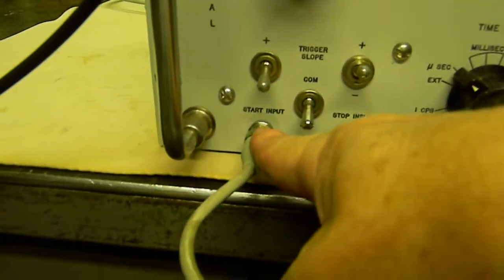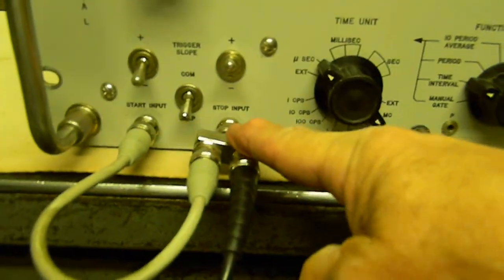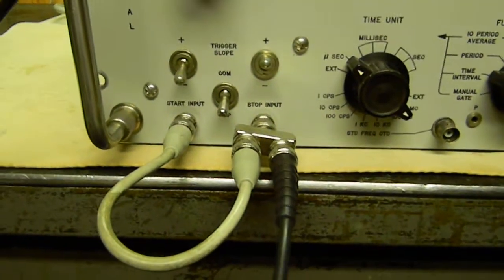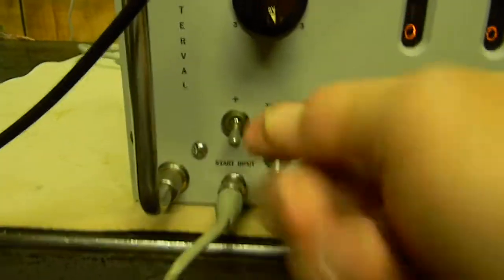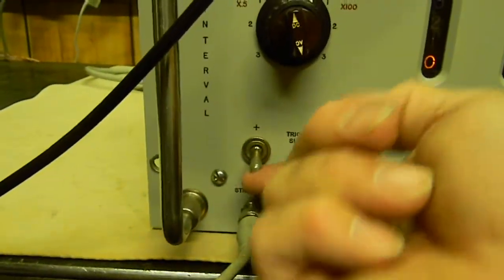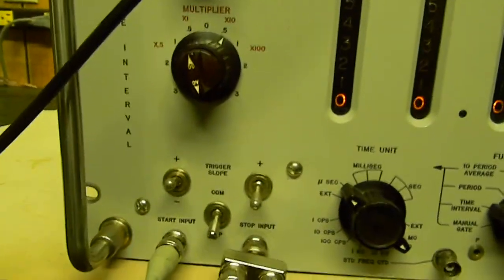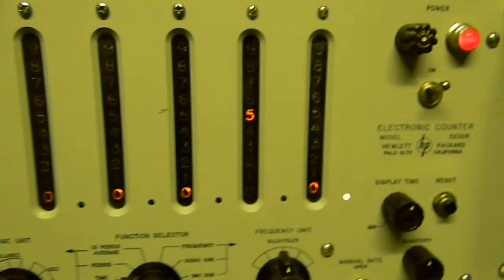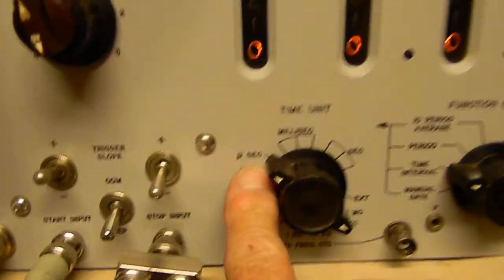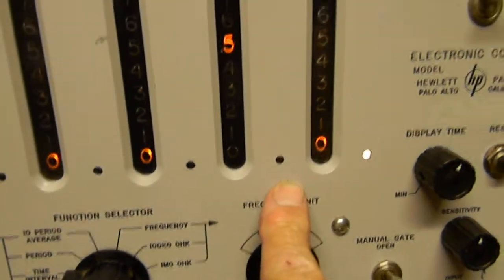I've got it set up right now. I've got the start input and the stop input jumpered together, same signal, same 10 kilohertz square wave. I'm going to set it to start on a positive pulse and stop on a negative pulse. So that gives us a time duration of 50 microseconds, which is right.